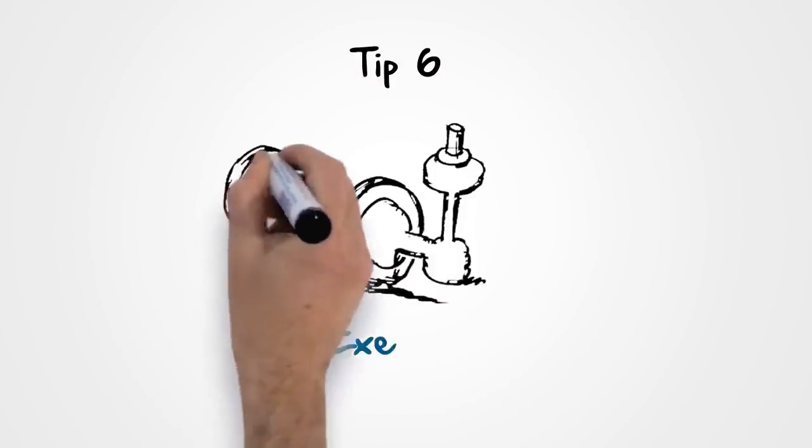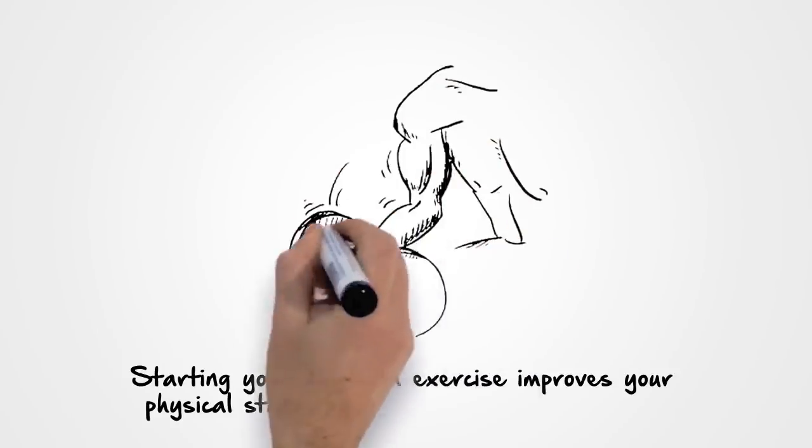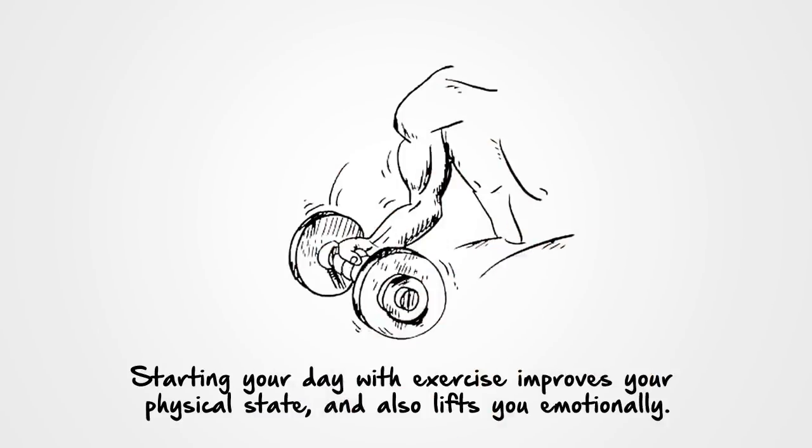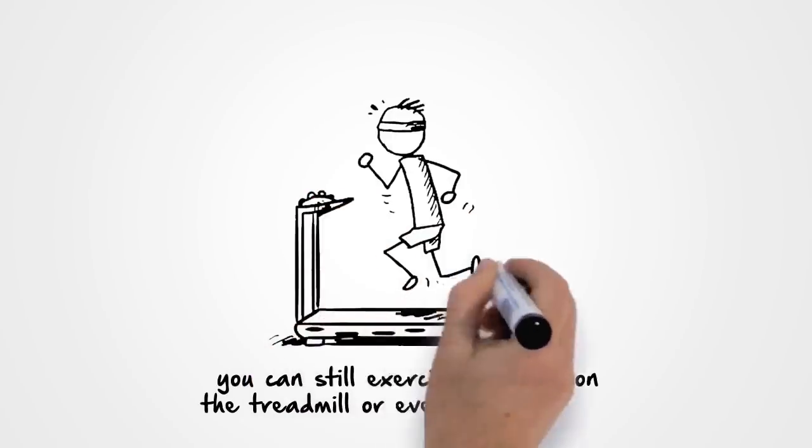Tip 6. Exercise. Starting your day with exercise improves your physical state and also lifts you emotionally. If you can't go to the gym, you can still exercise at home on the treadmill or even go for a walk.